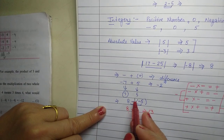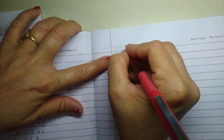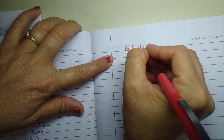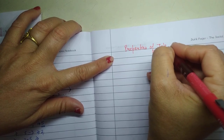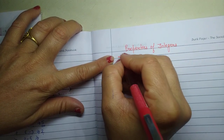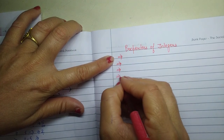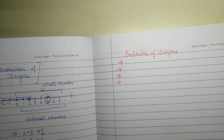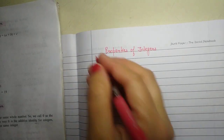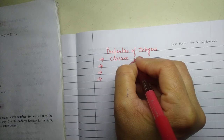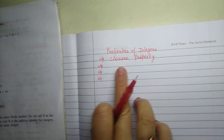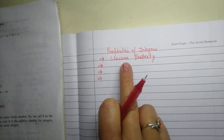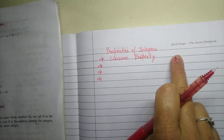After our discussion about the absolute value of numbers, we are going to discuss the properties of integers. The first property is the closure property. In closed property, if we add an integer with an integer, then we always get an integer as the answer.